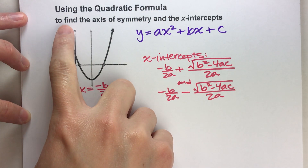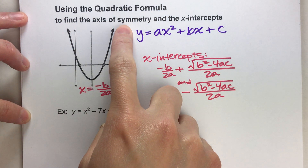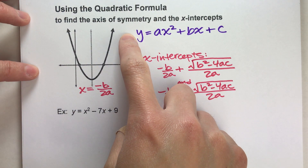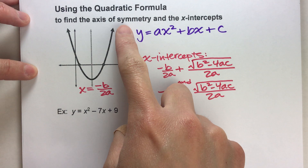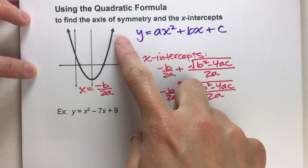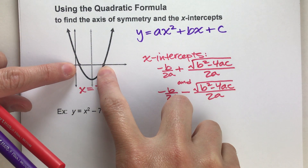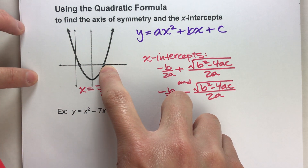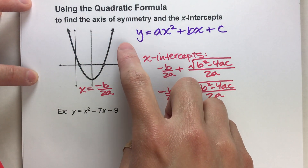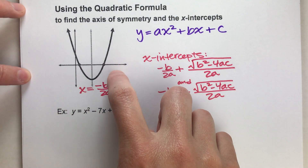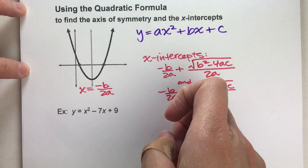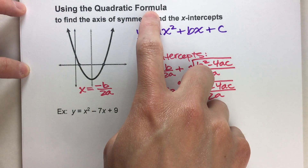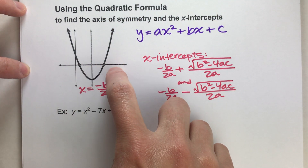Today we are using the quadratic formula to find the axis of symmetry and the x-intercepts of a parabola. If we have a quadratic equation, sometimes we can factor the equation, and that'll tell us where the intercepts are — where the graph crosses the x-axis — which helps us graph the whole parabola. But sometimes we have quadratic equations that can't be factored. In that case, we can use the quadratic formula to figure out where the x-intercepts are.